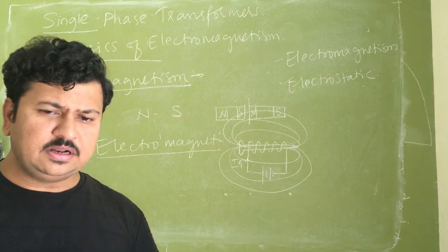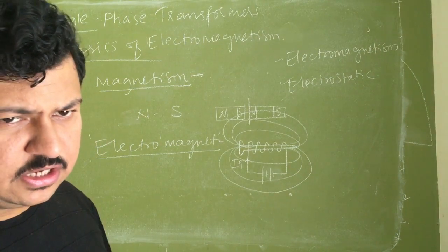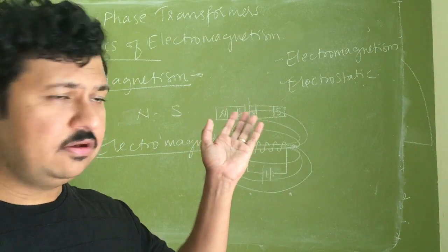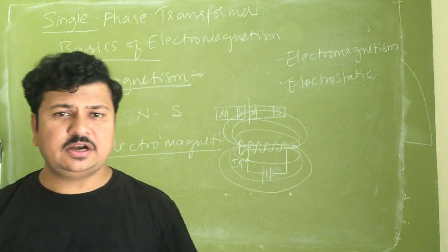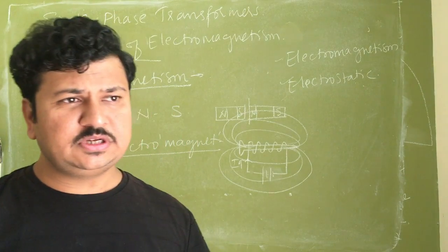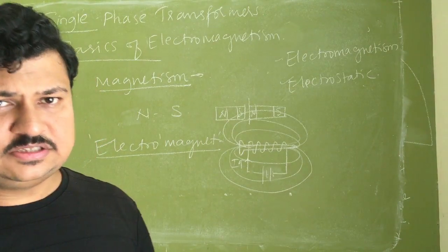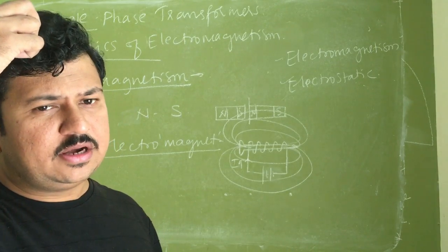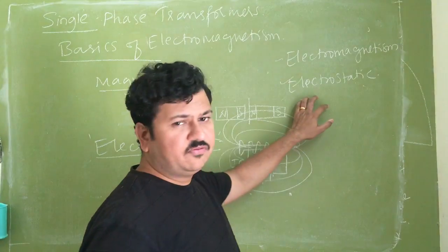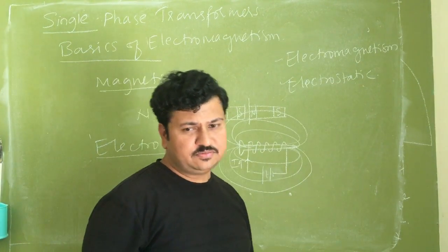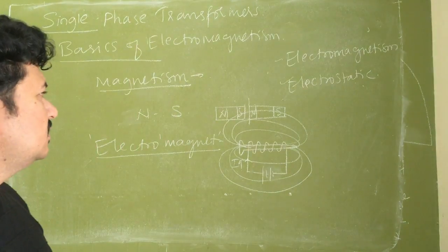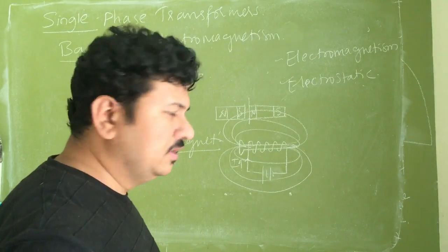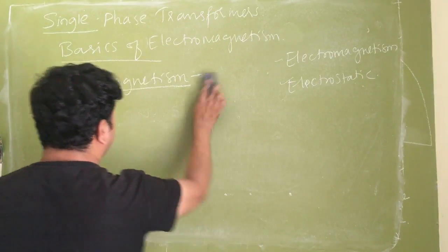Every electrical machine uses electromagnetic systems — motors in mixers, grinders, vehicles; all transformers; all generators, from small household generators to megawatt-rated generators in power stations — all are electromagnetic systems. We don't build electrostatic machines because of energy density. The energy density of an electrostatic system is very limited — only about 40 Joules per meter cube.